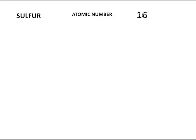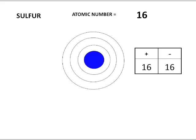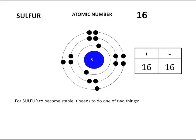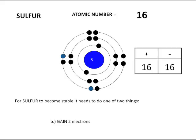Sulfur — we are to the right of the periodic table. The atomic number of sulfur is 16, so our proton to electron count is 16 to 16. We need 16 electrons: two in the first shell, eight in the next shell — a total of 10 so far — and we're now in group 16, so we add six more valence electrons. For sulfur to become stable, it can lose six electrons or gain two, and most likely it will gain two. Now our count is 16 protons and 18 electrons — a surplus of two extra negatives.